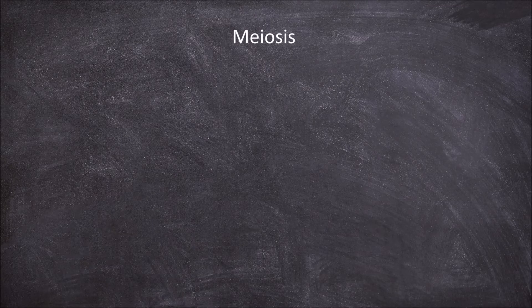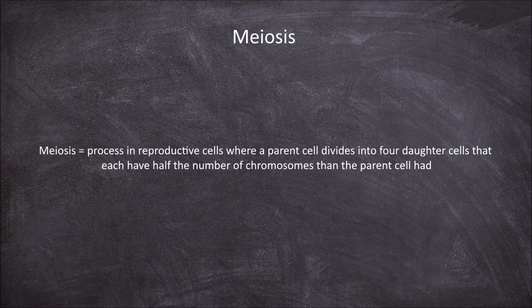In this video we're going to go over the steps involved in meiosis. Meiosis is the process that occurs in reproductive cells that produces the gametes — the sperm and the eggs. It is the process where a parent cell divides in such a way that forms four daughter cells that each have half the number of chromosomes that were present in the parent cell.